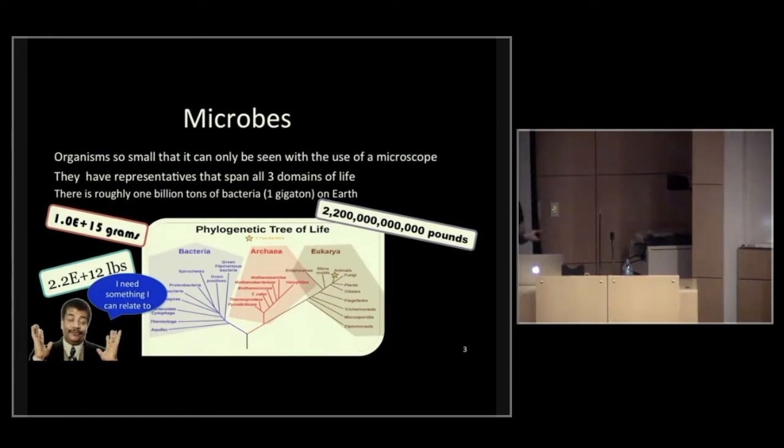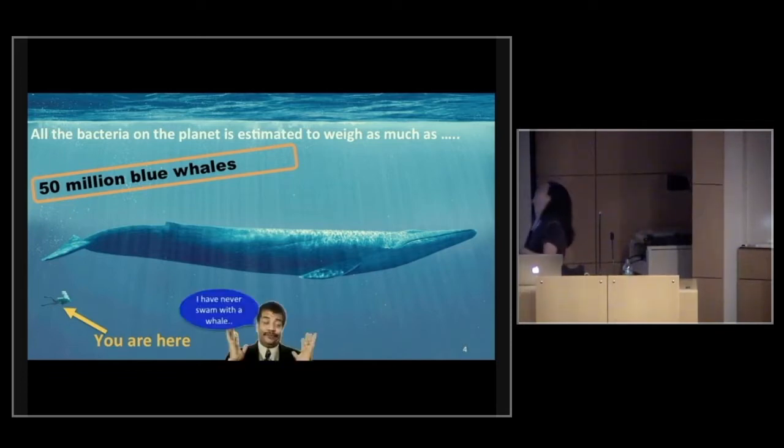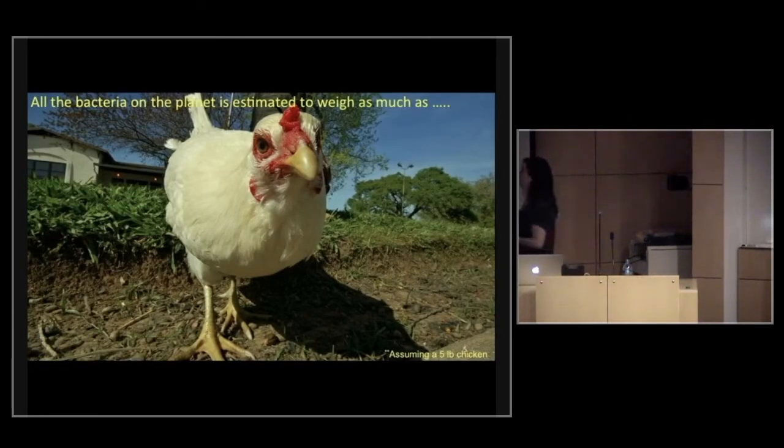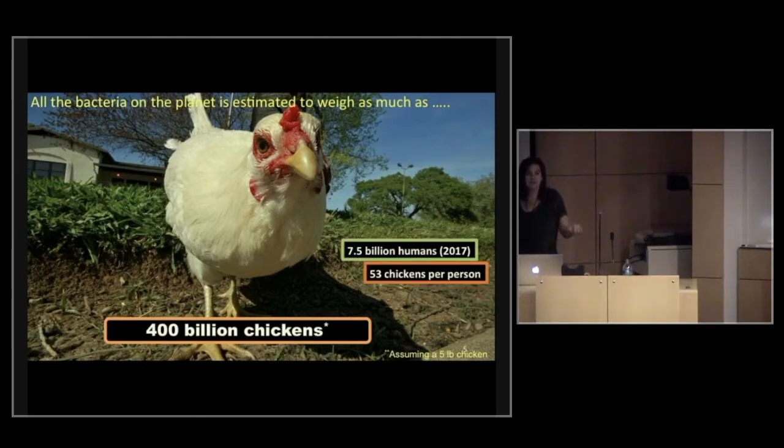Maybe you're like Neil. Neil's a good friend of mine. He needs something that he can relate to. Somebody did the math for us. All the bacteria on the planet is estimated to weigh as much as 50 million blue whales. For perspective, you are here. Oh, my gosh, Neil, really? I've never swam with a whale. Let's put this into perspective for the rest of us. Chickens! All the bacteria on the planet is estimated to weigh as much as 400 billion chickens. That's a lot of chicken. I did the math on this one. We have 7.5 billion humans on Earth. That's roughly 53 chickens per person. It emphasizes how important and how big of a player bacteria are.